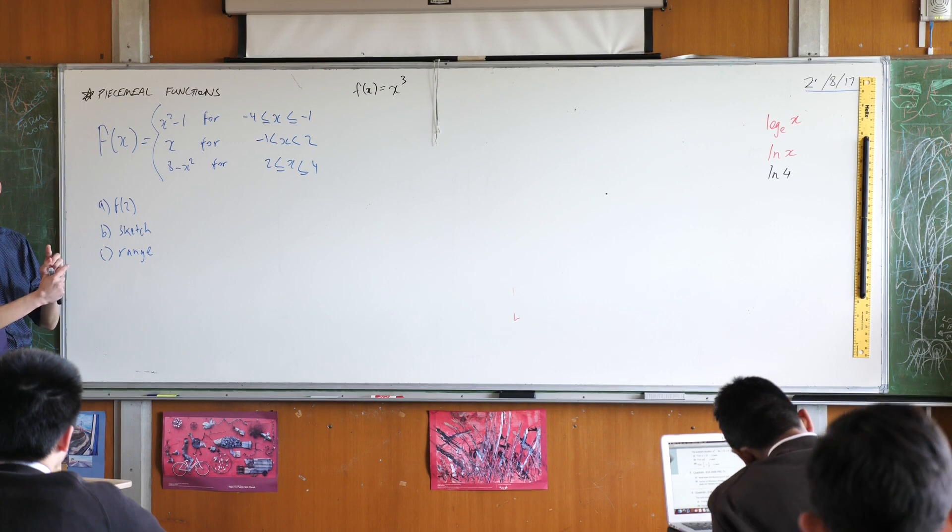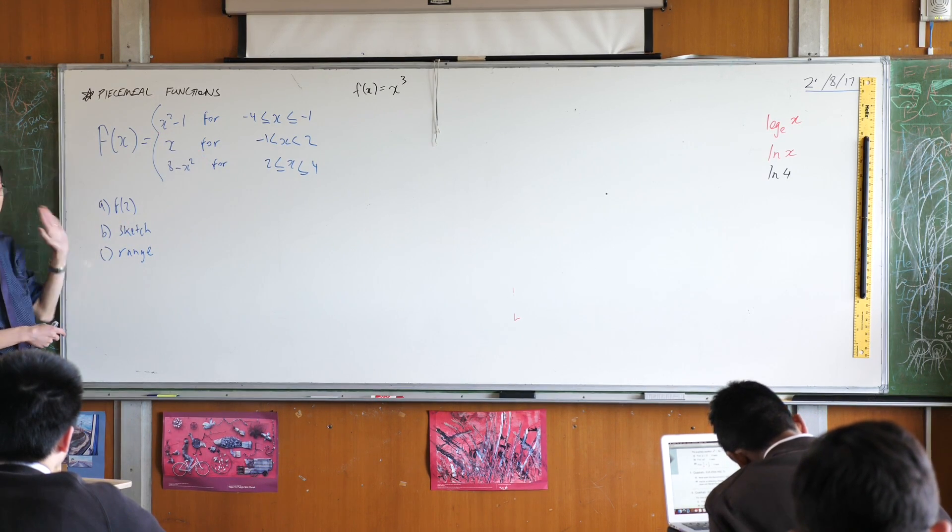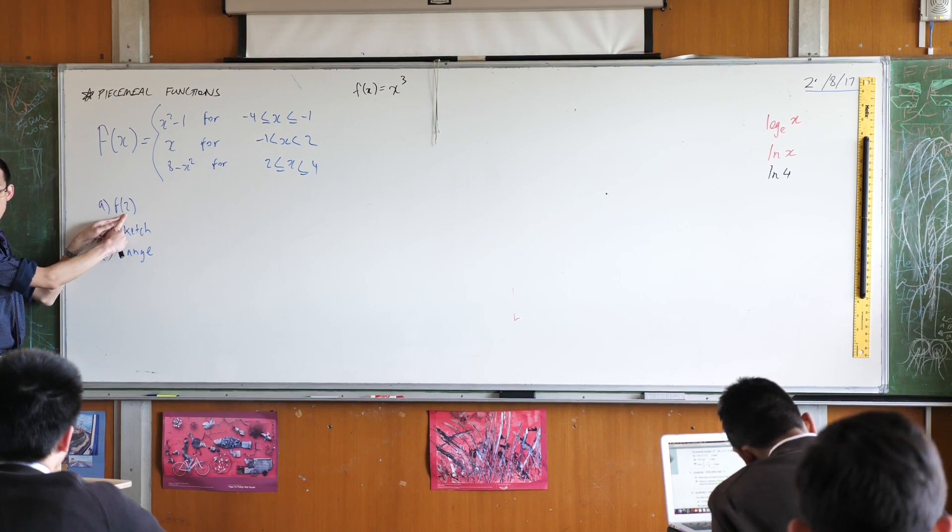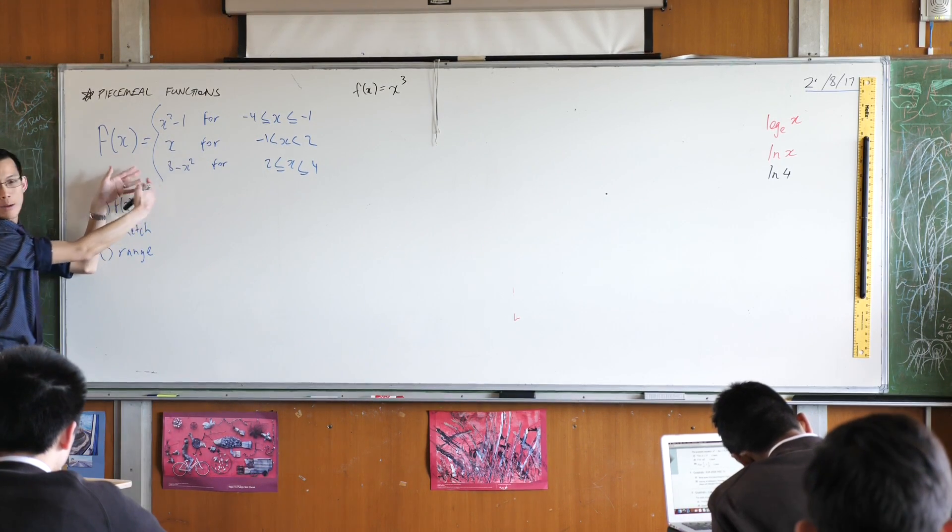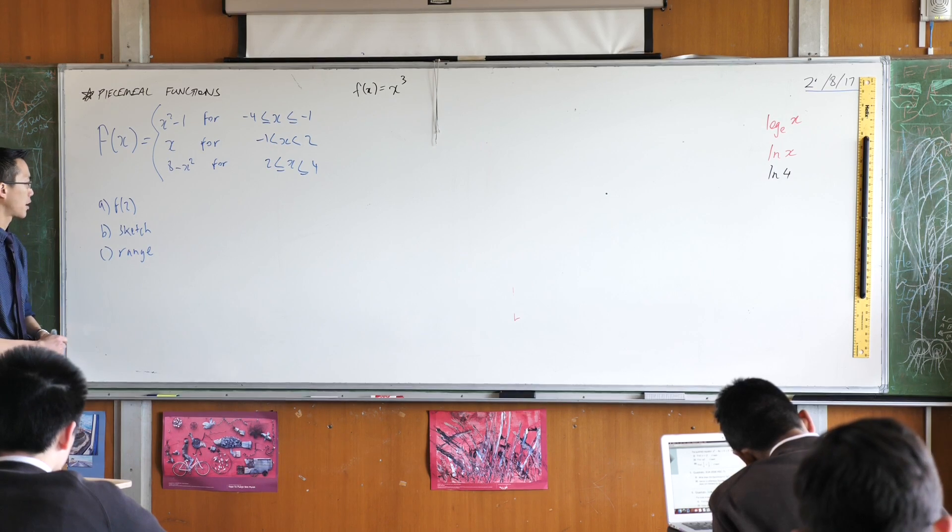So you actually have to kind of read it in reverse from right to left. You have a look at the value you're interested in, you go to the appropriate spot and then you evaluate whatever function is related to that.